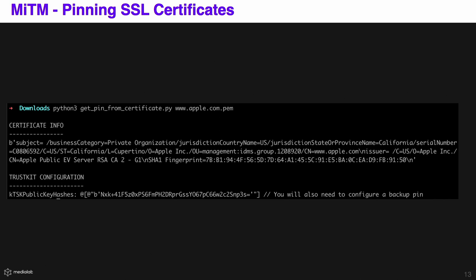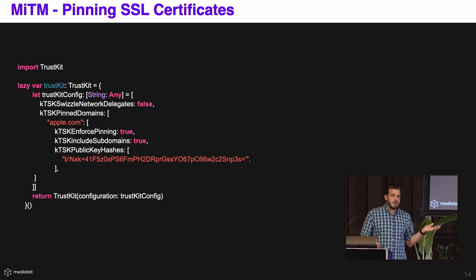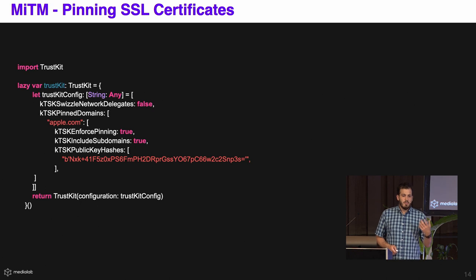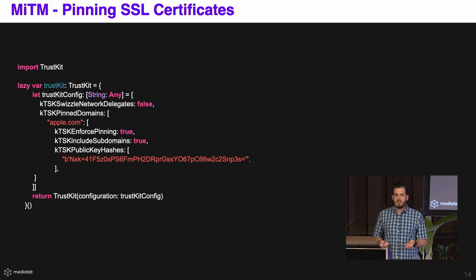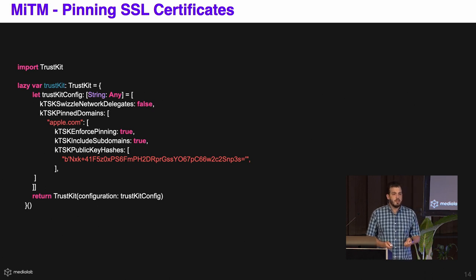TrustKit provides us with a script for doing this. You just have to use Python, get the pin certificate from the certificate, and you already get the Objective-C code for this. We can see that there is a public hash at the last line. Then we just create our configuration for TrustKit — it's really easy. We add the domain we want, in this case apple.com. Here we are enforcing the pinning, which means that if it doesn't match, the request will not go through. We also want to add all the subdomains because developer.apple.com is using the same root certificate. And then we add the hash we got from the previous step, and then we can start checking all the requests from our application.